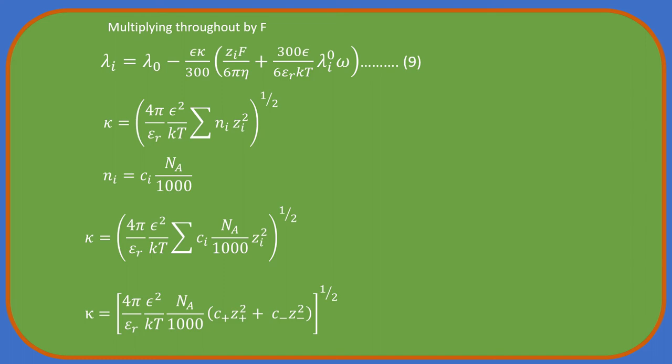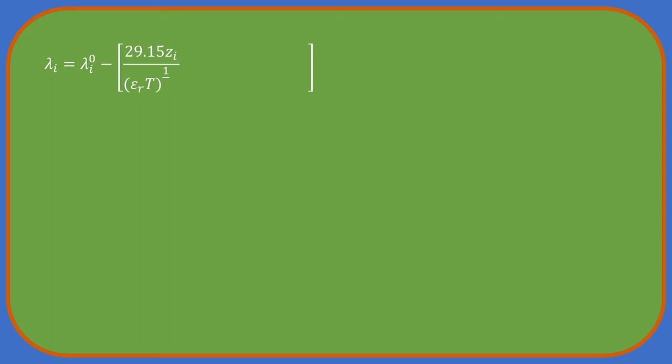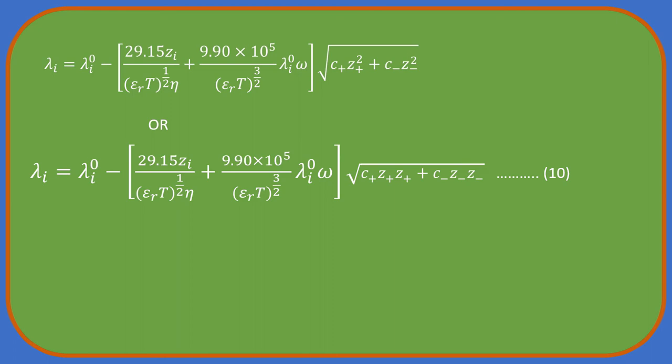Introducing the above expression for kappa in equation 9 and utilizing the standard values of F, epsilon, Boltzmann constant, and Avogadro constant, we get the result. C plus and C minus represent the concentration of the ions in mole per liter. This could be replaced by the molar concentration of the electrolyte, C, which will be same for both ions.